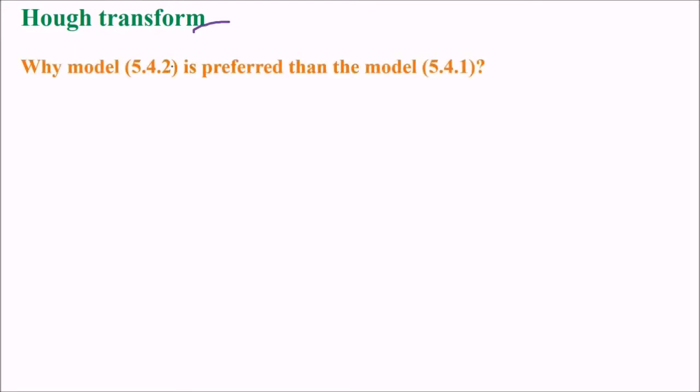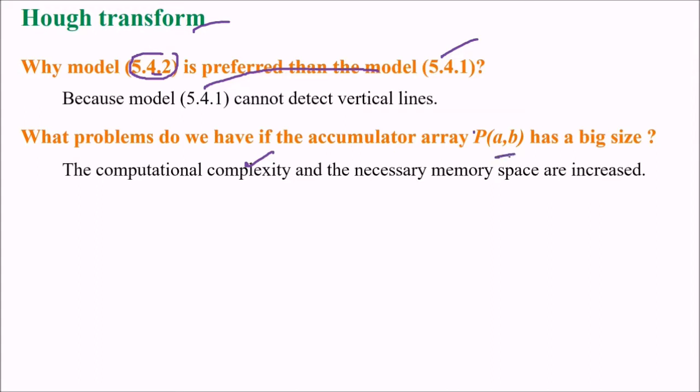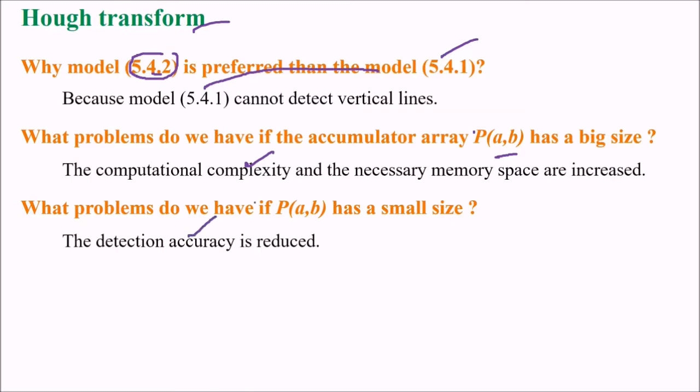Hough transform. Why model 542 is preferred than the 541? Because 541 can detect vertical lines also. What problems do we have if the accumulator array has a big size? Of course, the complexity and computation and memory will be increased. What problems do we have if it has a small size? The detection accuracy is reduced.